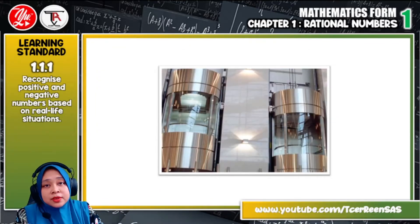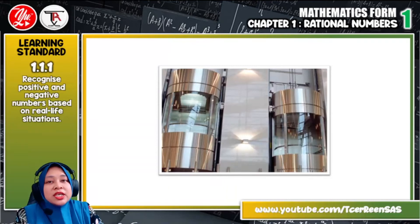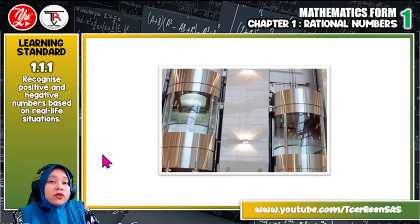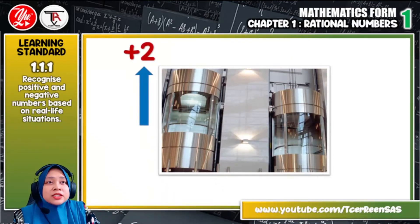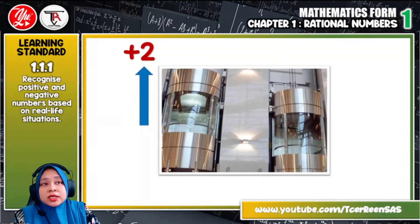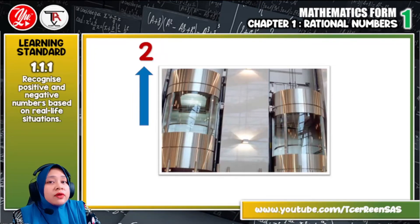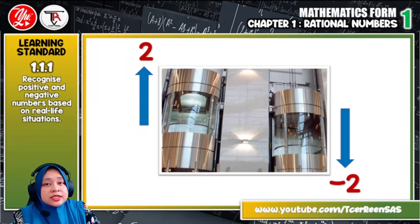For example, here you can see two lifts. The lift on the left side is going up two floors. So how to write it? We just write it as plus 2 or just write it as 2. And then the lift on the right is going down, so we just write it as negative 2.